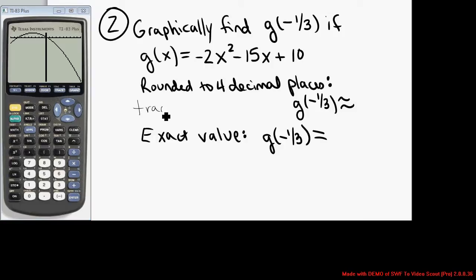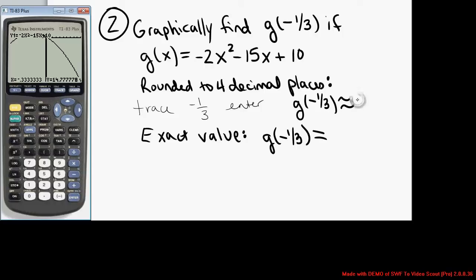I hit trace, type negative one-third, and press enter. The calculator returns a y value of approximately 14.7778.